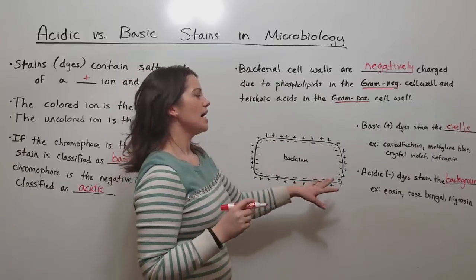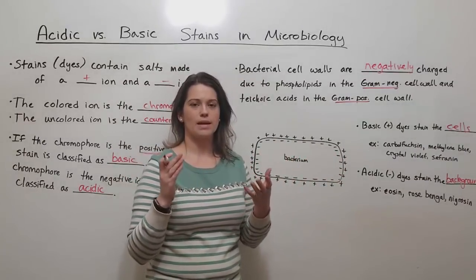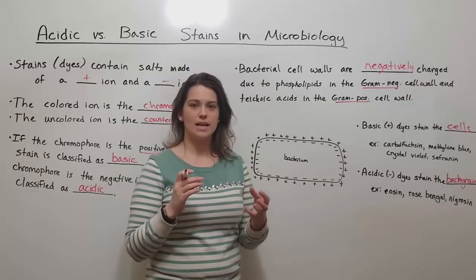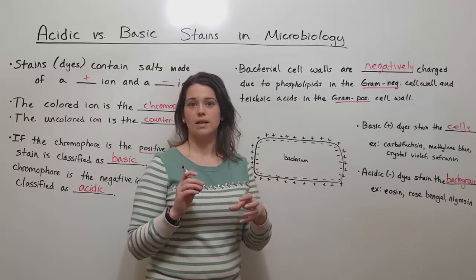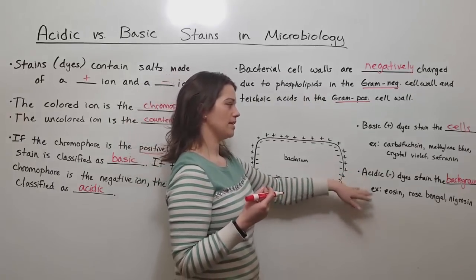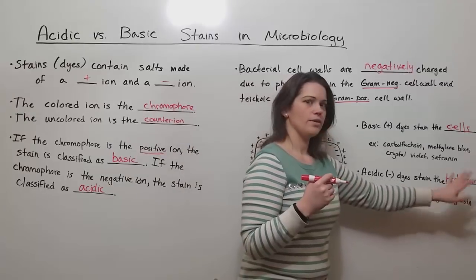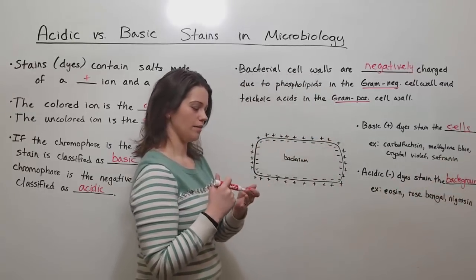What this does is you end up having a colorful background where the bacterial cells that are present appear to be white and unstained. That's what it looks like when you use acidic dyes. Some common acidic dyes are eosin, rose bengal, and nigrosin.